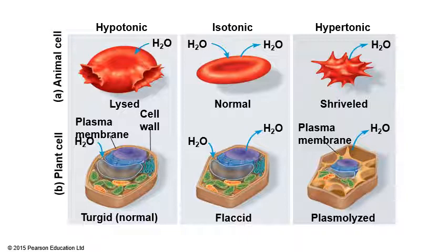For plant cells, it's basically the same but a little different. A plant cell in a hypotonic solution will become turgid — it absorbs water but won't explode because it has a cell wall for protection. Being turgid is actually very good for plant cells because they need some water and the pressure is beneficial for cell growth, which is characteristic of plants.